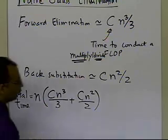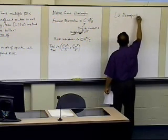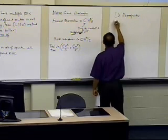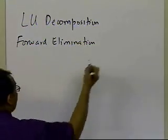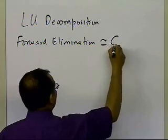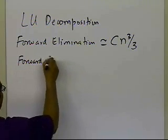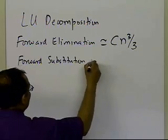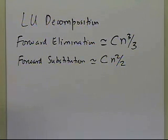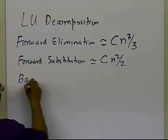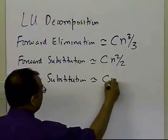Now, what about LU decomposition? In the LU decomposition method, forward elimination is going to take the same amount of time as in Gaussian's method, because I'm using the same forward elimination steps to do the LU decomposition — so it will be cn³/3. Then I also have to do forward substitution, which takes approximately cn²/2, because forward substitution is analogous to back substitution. And then back substitution will take approximately cn²/2 as well.